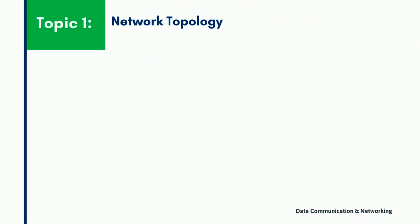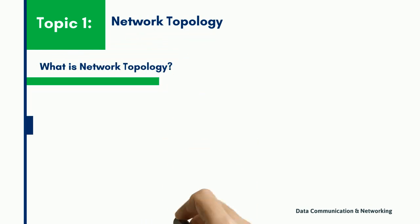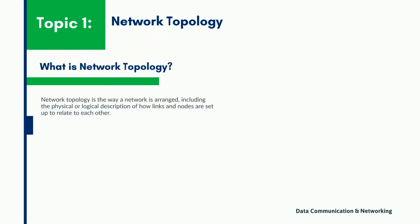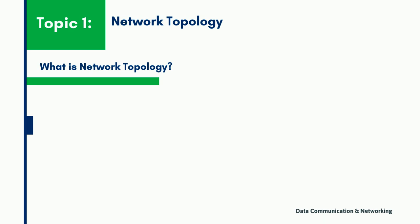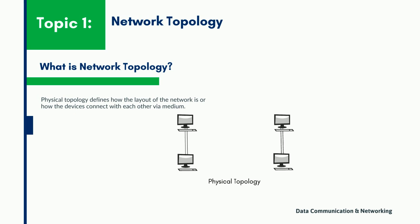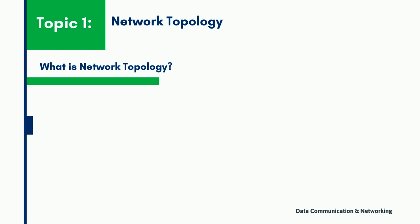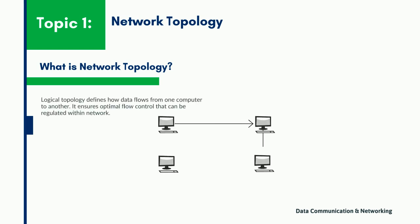Let us understand what is a network topology. A network topology is the way a network is arranged, including the physical or logical description of how links and nodes are set up to relate to each other. It is basically of two types: logical topology and physical topology. A physical topology means how the devices connect with each other, while in the logical topology it describes how data flows from one computer to another, and it ensures optimal flow control that can be regulated within the network.